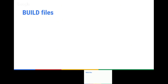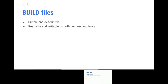BUILD files are intended to be simple and descriptive — a high-level representation of your project. What are the targets? What are the binaries, the libraries? What depends on what? It needs to be readable by both humans and tools. When you look at a BUILD file, you should have an idea of what's going on and how the project is structured. This is also important for tools because we want tools to be able to read and understand the BUILD file.